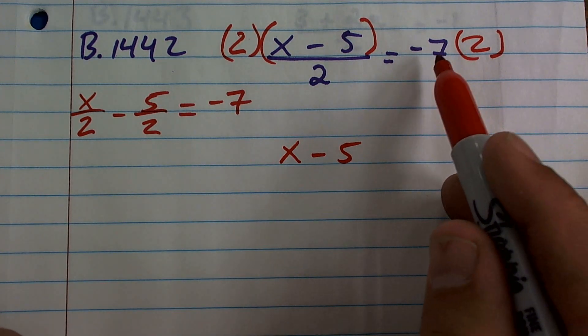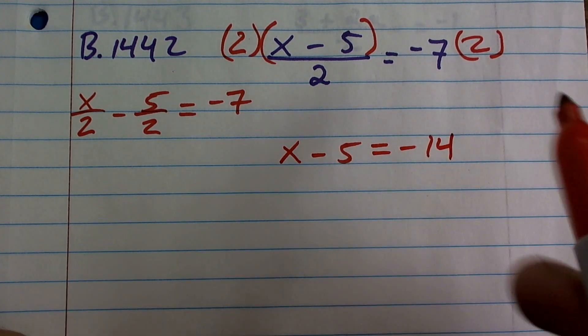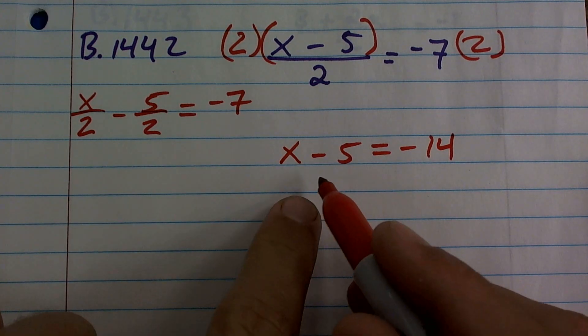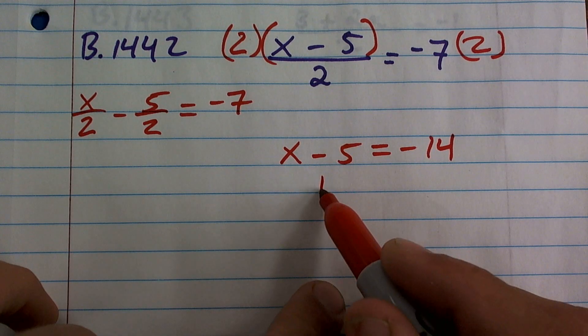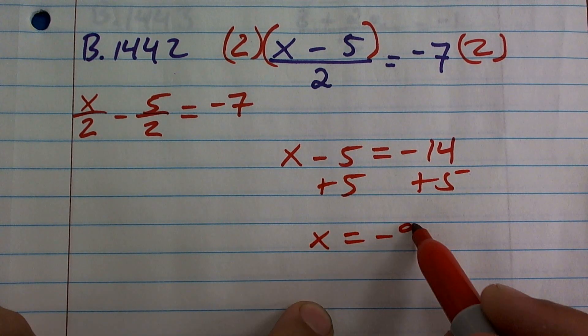So therefore, I have negative seven times two, which is equal to negative 14. Now, I'm just going to follow my inverse operations of a one-step equation and get this variable by itself. So since my variable is being subtracted by five, I'm going to add a five, and I have x equals negative nine.